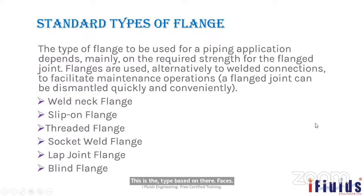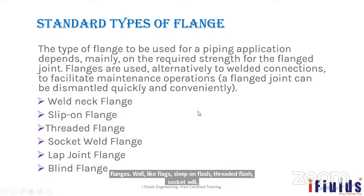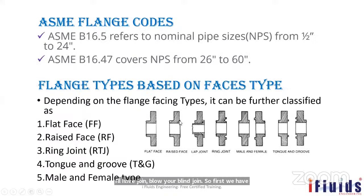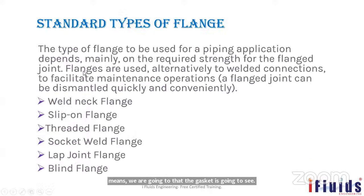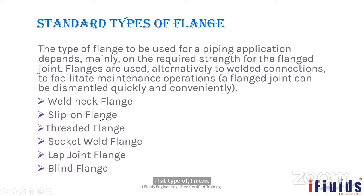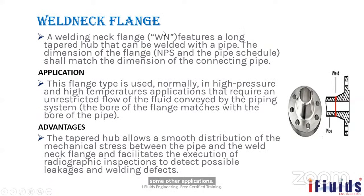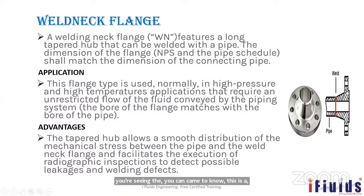Based on the type of weld or connection, flanges are classified as: weld neck flange, slip-on flange, threaded flange, socket weld flange, lap joint flange, and blind flange. The weld neck flange has a projecting neck — it is identified by this neck, and can be with a flat face or raised face.